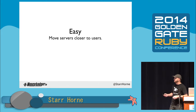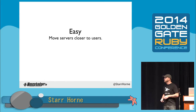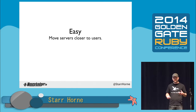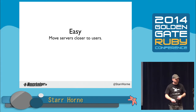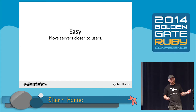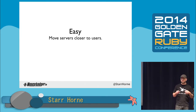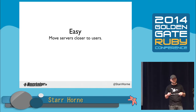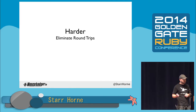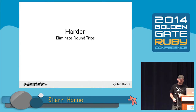So how do you get rid of latency? There's an easy way, which is to move your servers closer to your users — that's why we use CDNs, content delivery networks. But you can't really do that for everything, because chances are you have centralized infrastructure. So we're going to talk about the slightly harder task of eliminating round trips.